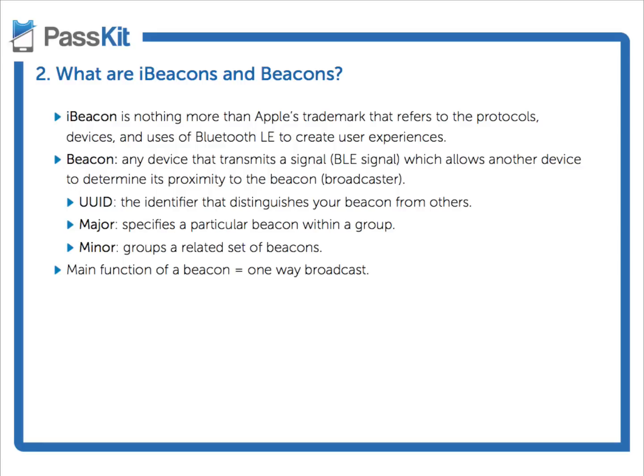Another component of the UUID — these are optional components — are the major and minor values. The major value specifies a particular beacon within a group. For example, a major value of one could refer to beacons only in your New York store, and a major value of two could refer to beacons in your Los Angeles store. The minor value gets more detailed, grouping a related set of beacons together. Within your New York store, a beacon at the entrance could have a value of three, one at a certain department a value of four, and the cashier a value of five. It's the combination of these three components that makes up what the beacon actually transmits.